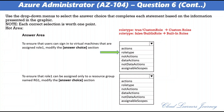For the second answer area: to ensure that Role1 can be assigned only to a resource group named RG1, modify the assignable scopes. You can specify a scope at four levels from broad to narrow: Management Group, Subscription, Resource Group, and Resource.